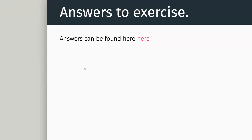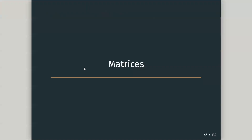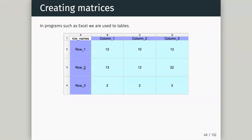So that's vectors — let me know if you have any problems or questions. The next thing we want to talk about is matrices. Whereas vectors are just one-dimensional and ordered, matrices are two-dimensional and ordered. Actually, they can be multi-dimensional but typically we look at them as two-dimensional.